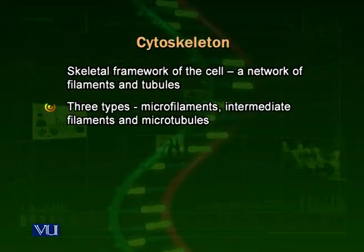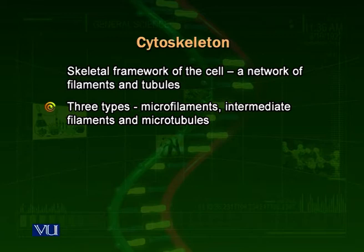The cytoskeleton also helps different organelles inside the cell move from one place to another when required. The cytoskeleton consists of three types of fibers: microtubules, microfilaments, and intermediate filaments. We will talk about them one by one.